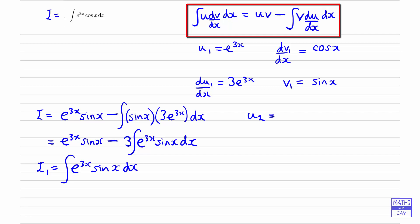And now we don't actually have a choice. Having started off by choosing u1 as e to the 3x, we've got to continue by letting u2 be e to the 3x. So our dv2 by dx will be sinx. Remember, we're now looking at the integral i1.